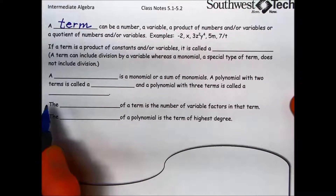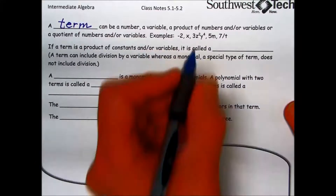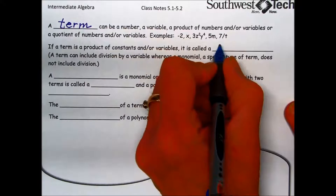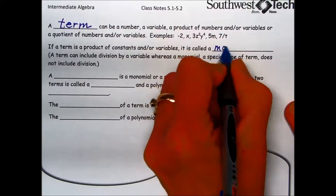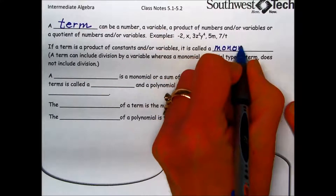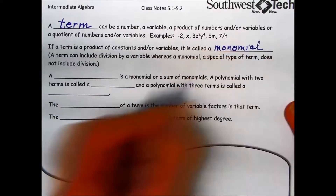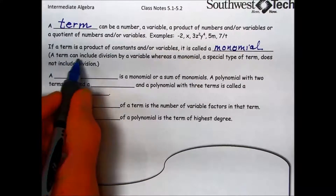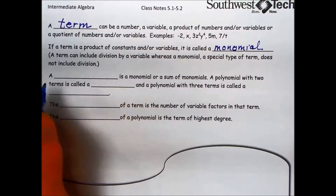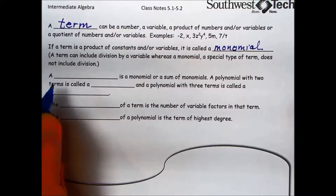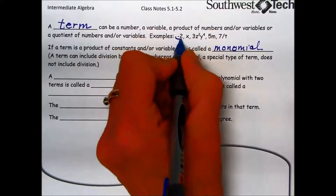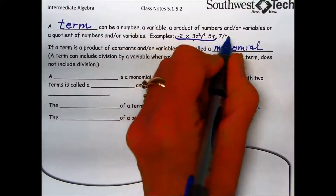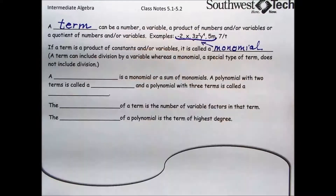A term is a product of constants and/or variables. A special type of term is called a monomial. A term can include division by a variable, whereas a monomial does not include division. So all of these examples, with the exception of the last one, would be monomials. We can't have division in a monomial.